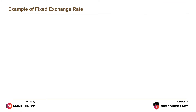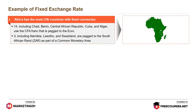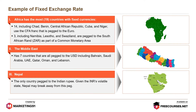Africa has the most countries with fixed currencies. 14 countries including Chad, Benin, Central African Republic, Cuba, and Niger use the CFA franc that is pegged to the euro. And 3 countries including Namibia, Lesotho, and Swaziland are pegged to the South African rand (ZAR) as part of a common monetary area. The Middle East has 7 countries all pegged to the USD, including Bahrain, Saudi Arabia, UAE, Qatar, Oman, and Lebanon. Nepal is the only country pegged to the Indian rupee, and given the INR's volatile state, Nepal may break away from this peg.